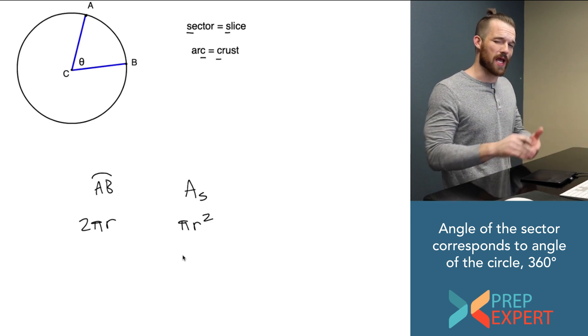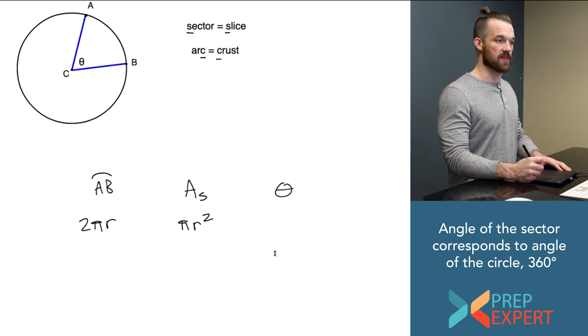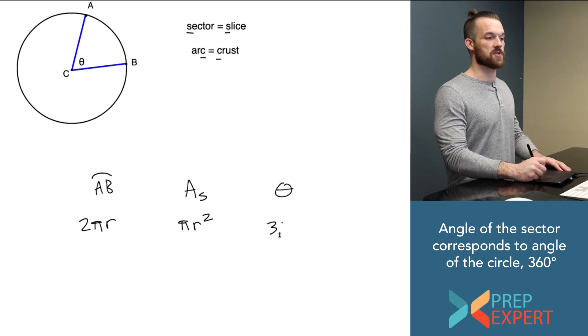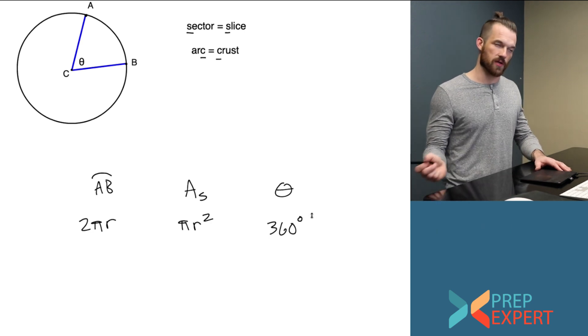It would then be the central angle of the circle as a whole, which we know is always 360 degrees. So again, theta corresponds to the central angle of the circle as a whole, which is always 360 degrees.